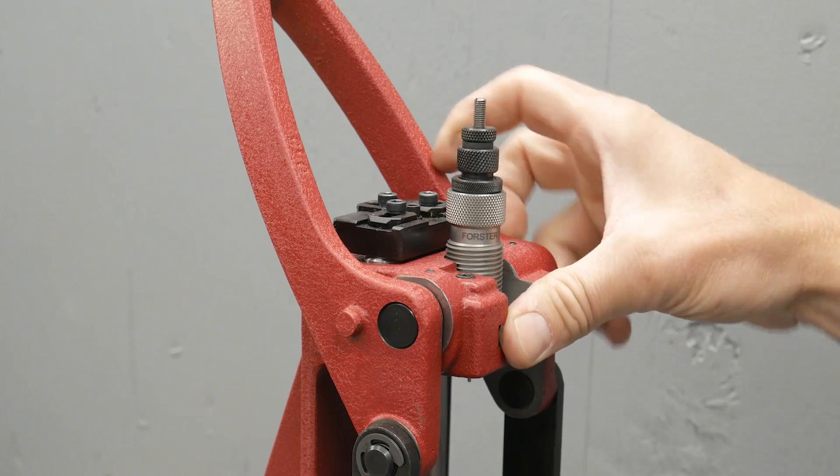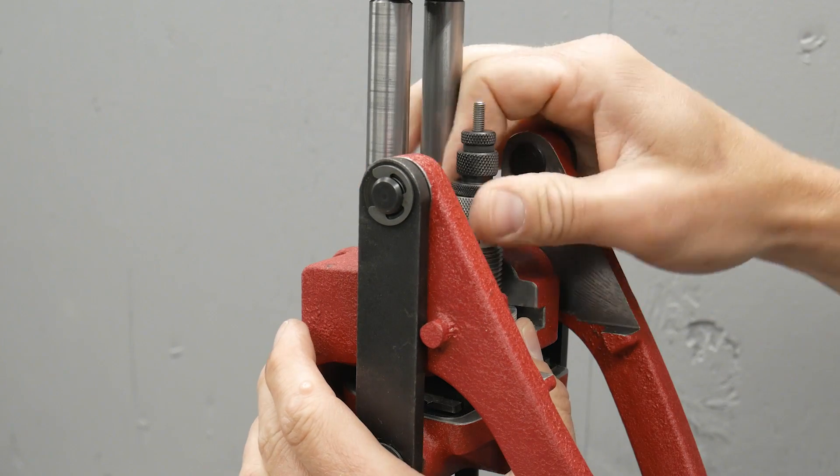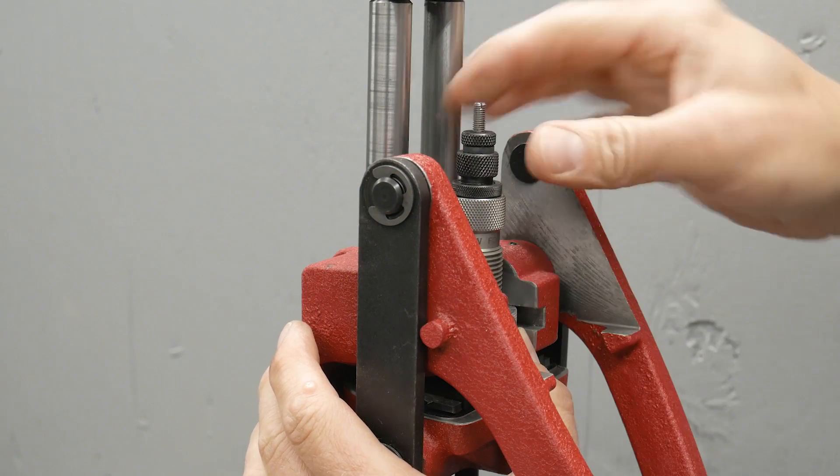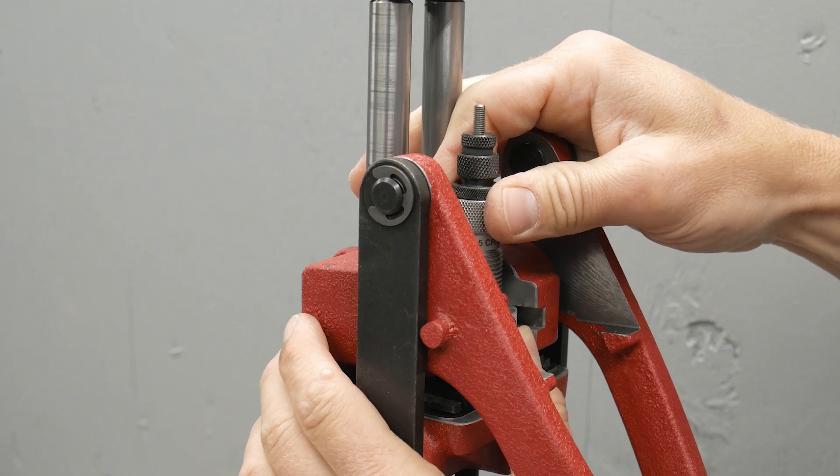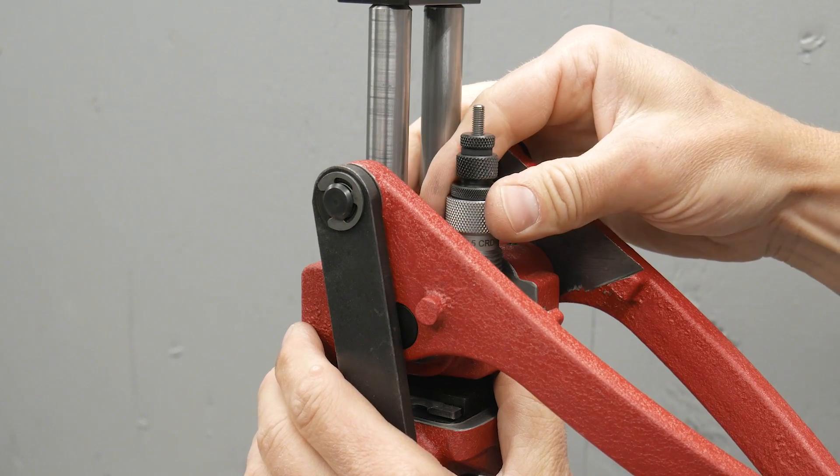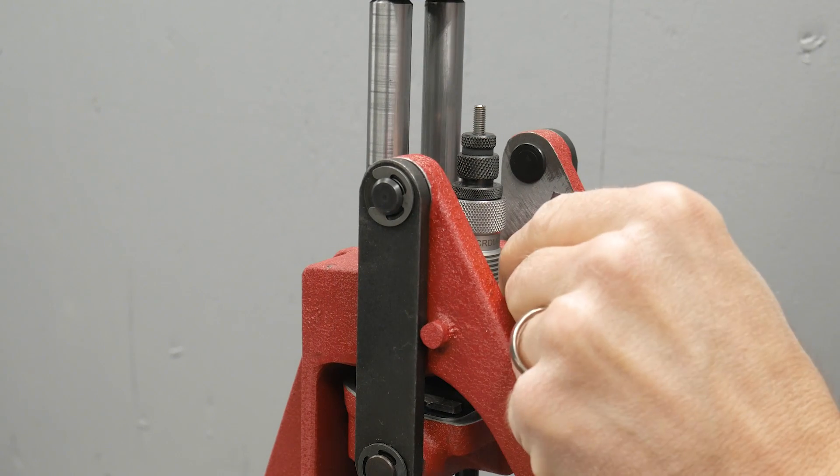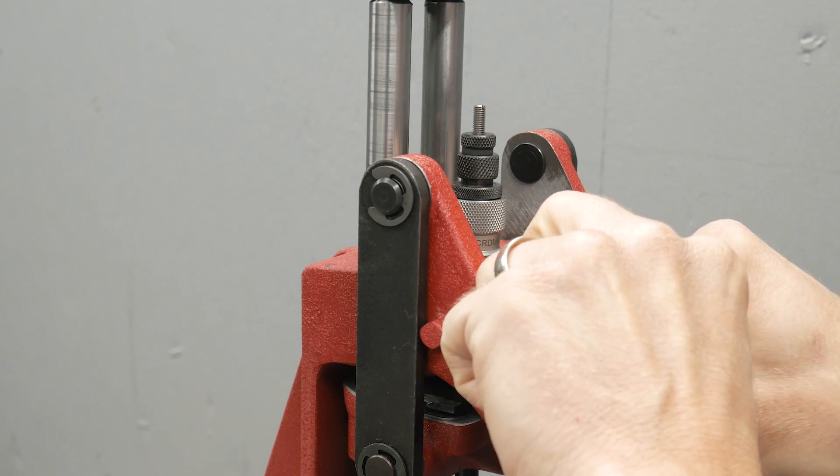Next, we want to insert the die into the press and then raise the ram, hold the lock ring. I like it oriented like this so that we can get the Allen key in there to tighten the lock ring. Alright, so I'm basically bottomed out there. I'm going to raise the ram slightly, give it just a little bit of cam over. Okay, now I'm going to tighten the lock ring so that we can preserve this setting.